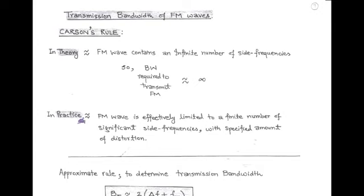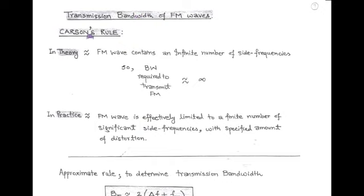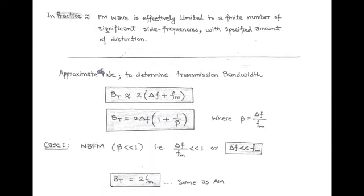But in practice, FM wave is limited to a finite number of side frequencies having a specified amount of distortion. So here we talk about the transmission bandwidth of FM wave, which can be determined by using Carson's rule — also called the approximate rule.